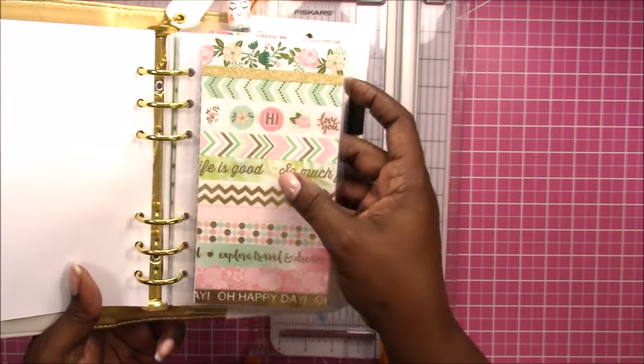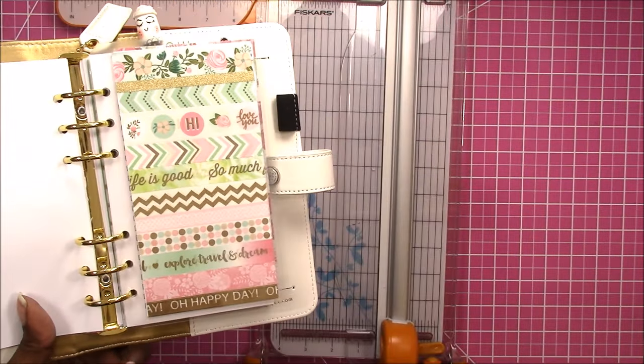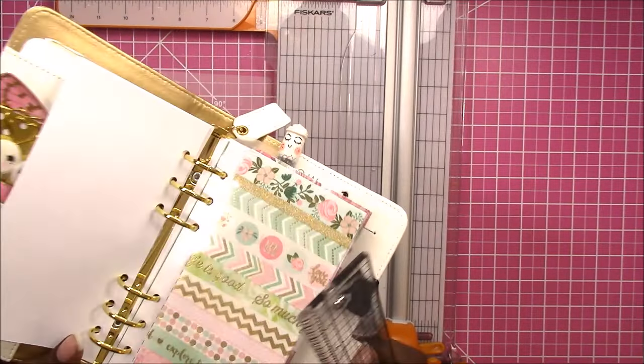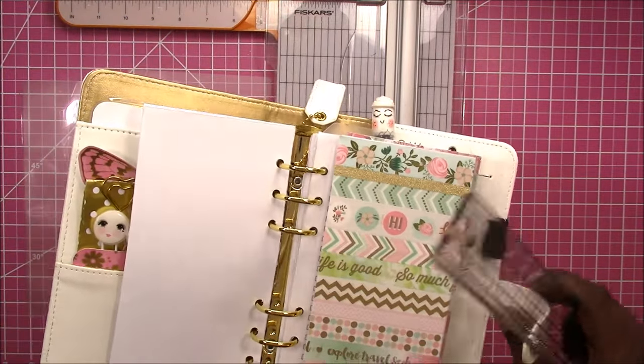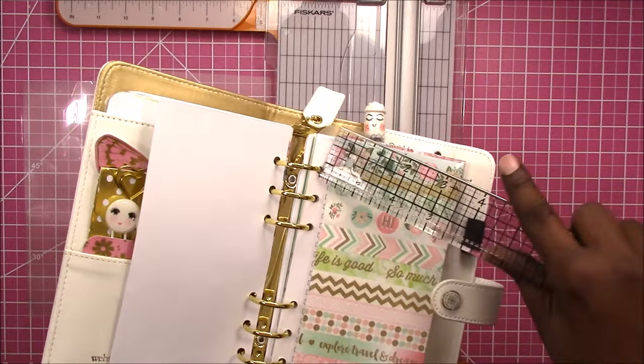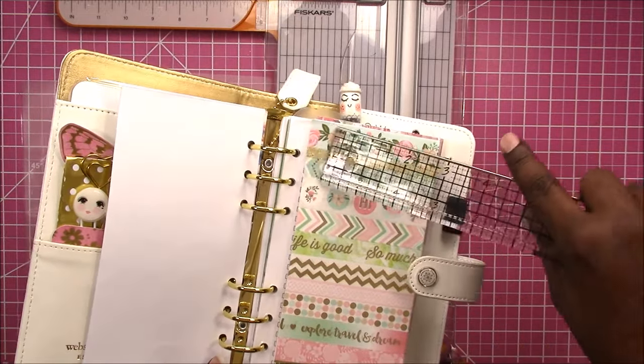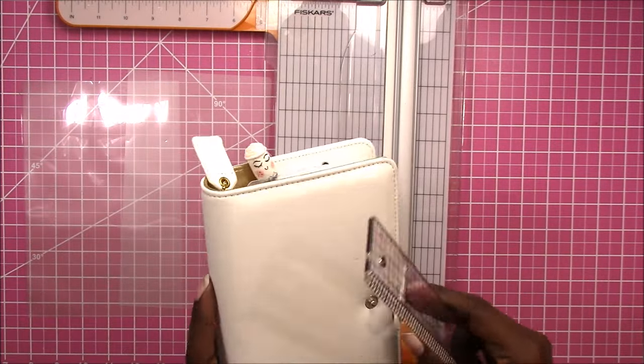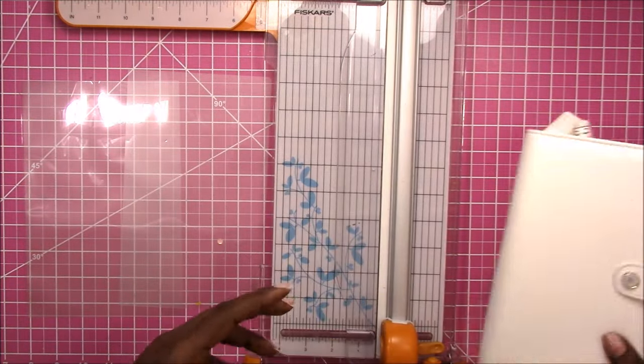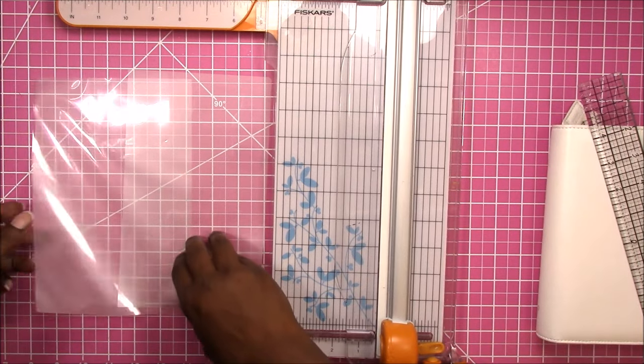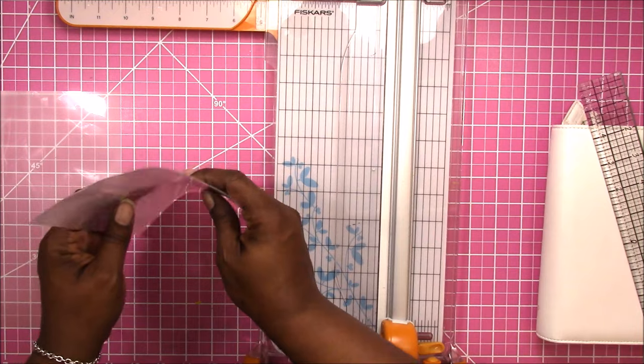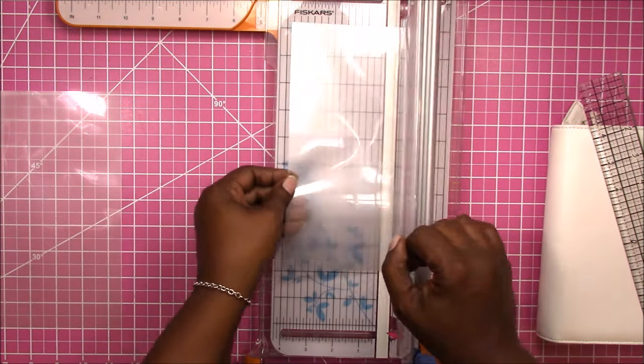So I usually, I think I left about a half of an inch. So being that the inserts are three and three quarters and I need a half an inch for the binder rings, that would leave my pouch at three and a quarter inches wide. So I am going to trim the piece that I'm using for my pouch to three and a quarter inches.